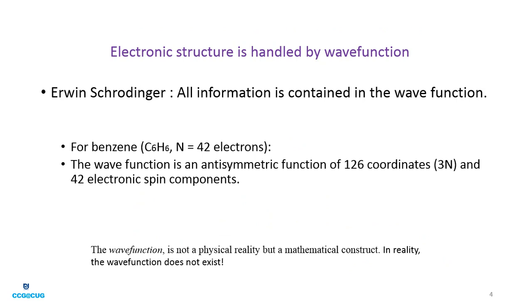Edmund Schrödinger in 1925 gave wave function theory, stating that all information is contained in the wave function. For benzene, which has 42 electrons, the wave function would be an antisymmetric function with 3N = 3 × 42 = 126 coordinates, along with 42 electronic spin components having alpha and beta. This wave function is not a physical reality but a mathematical construct — in reality the wave function does not exist, but it gives a lot of information about your chemical system.